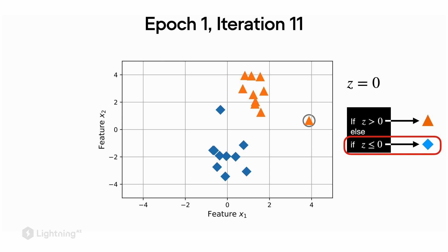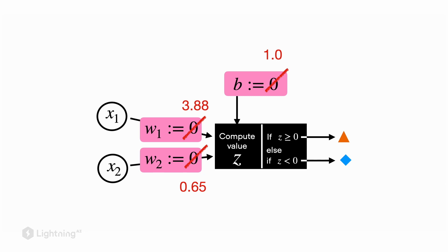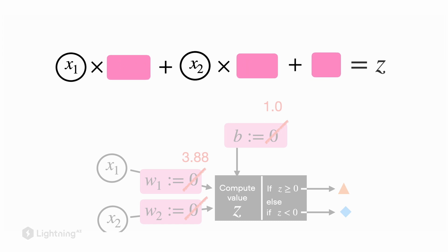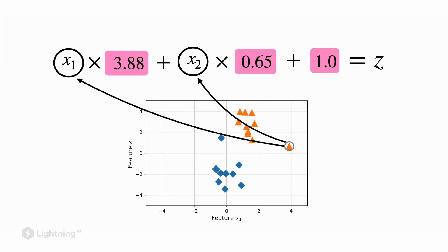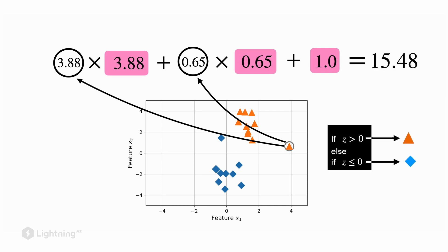However, in this case the prediction is actually wrong because the true class is an orange triangle. So we encounter our first error, and we use this error to update the model weights and the bias unit. Shown here are the updated weight parameters and the updated bias unit. We will see later how we actually compute the precise numbers, but trust me that these are the correct weight updates for this iteration. The weighted sum is consequently not zero anymore. If we now provide this orange triangle as input — the x1 and x2 values corresponding to this training example — computing the weighted sum involving the data input, weight parameters, and bias unit gives a value z greater than zero. Now we predict the orange triangle, and we can see that the perceptron makes a correct prediction after updating the model weights and bias unit.